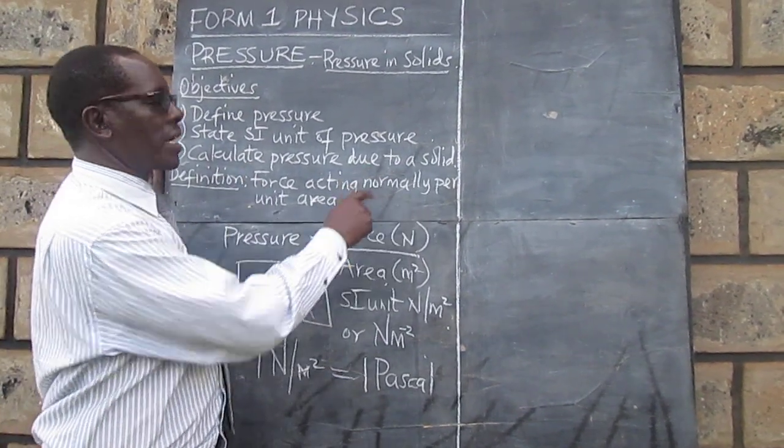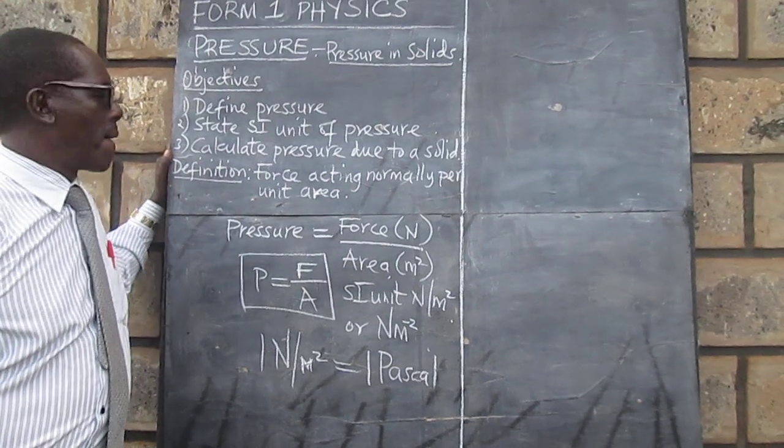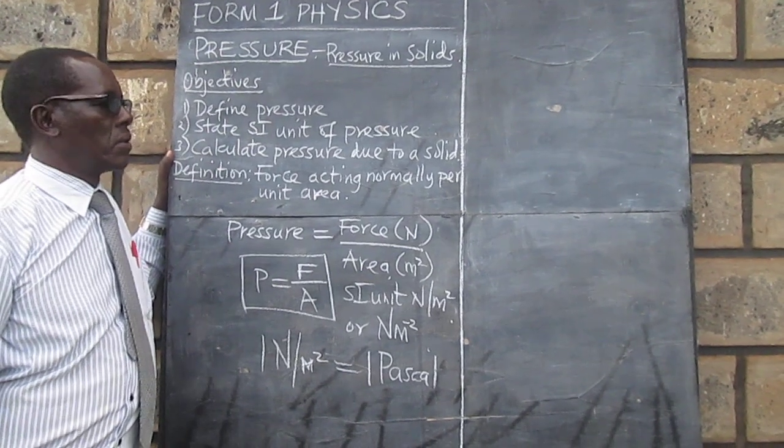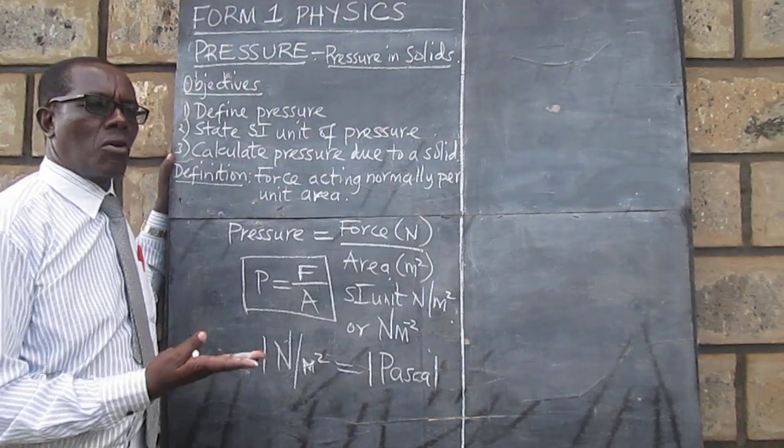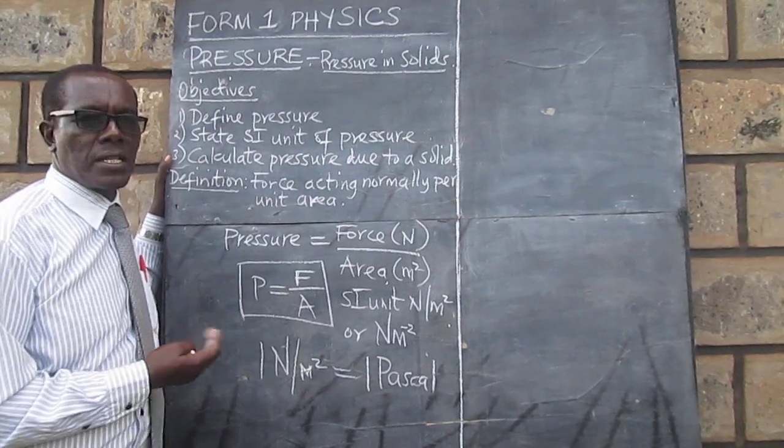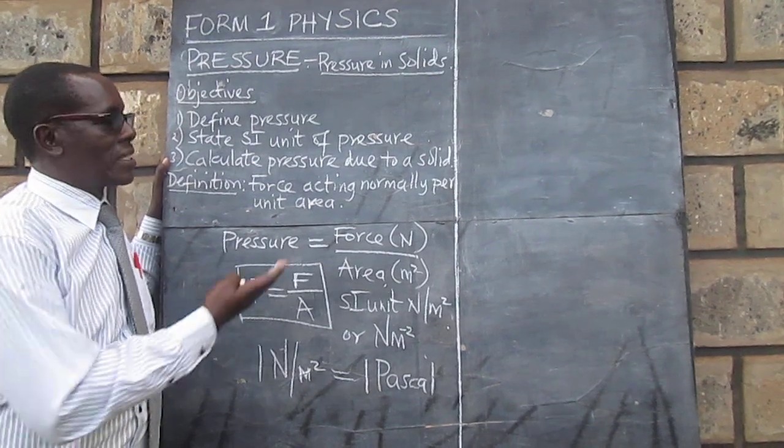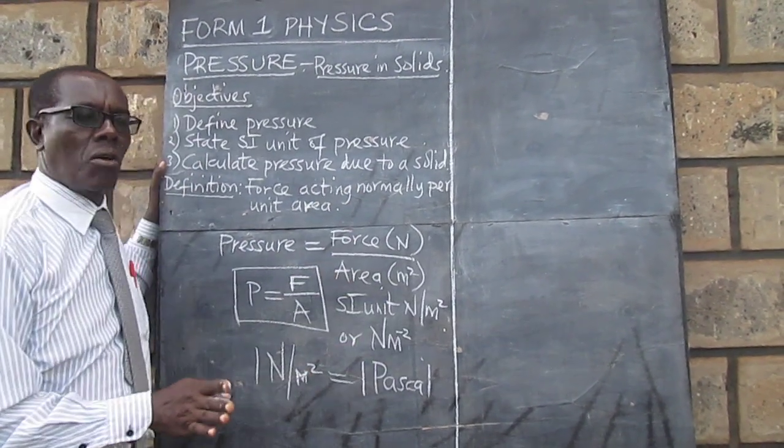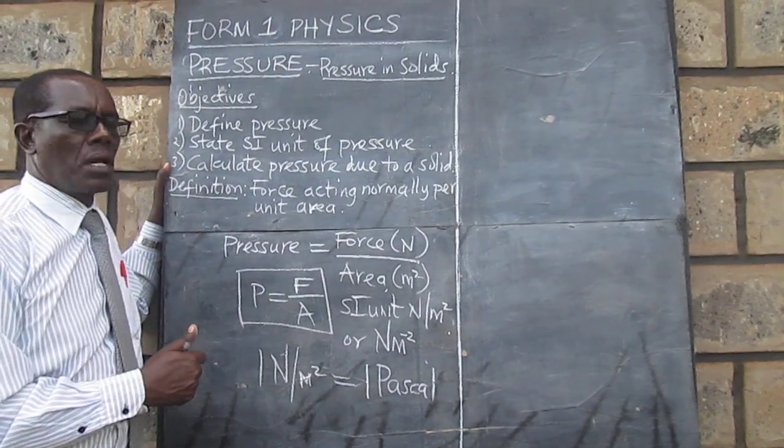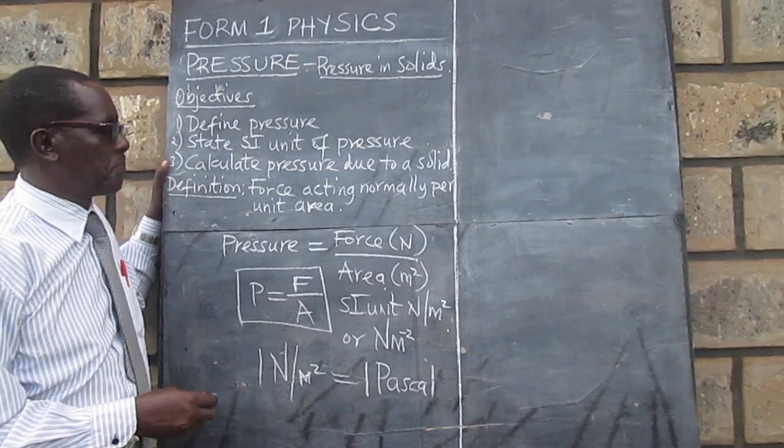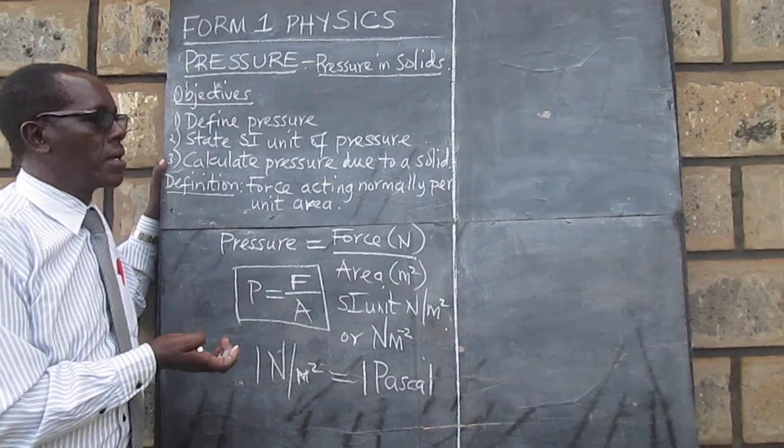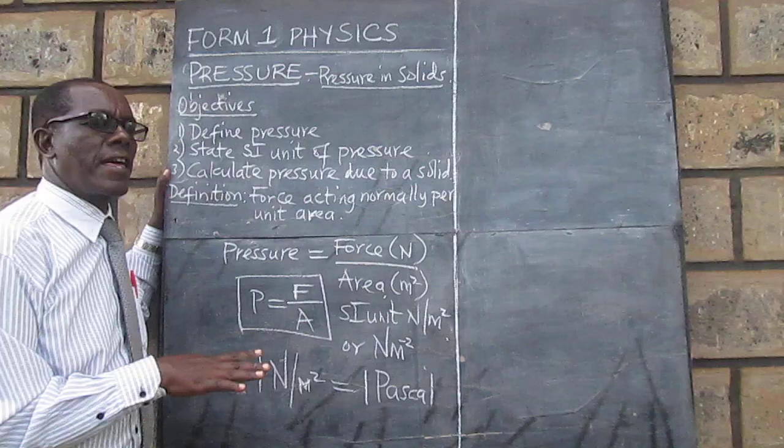We now would like to look at an example based on pressure due to a solid. Whenever we place an object on a surface, that object exerts a force on that surface. And we have just seen that whenever a force is exerted on a given area, pressure is created. So we want to look at an example where an object is placed on a surface and then we work out how much pressure that object is going to produce on that surface.